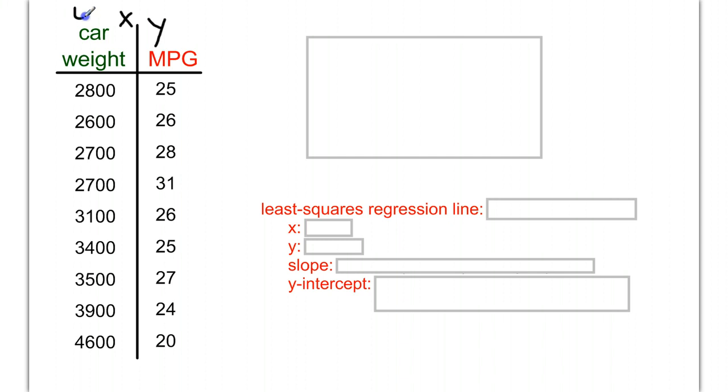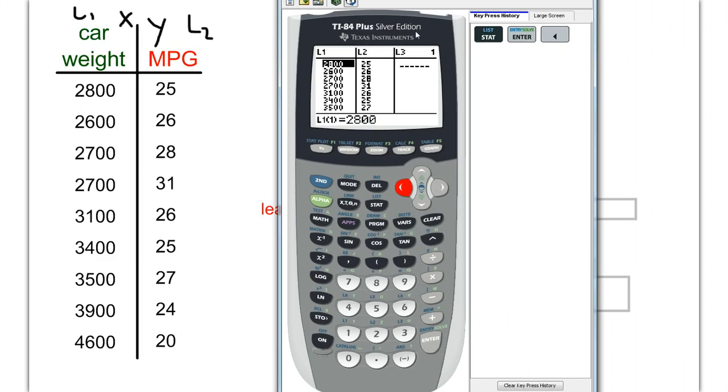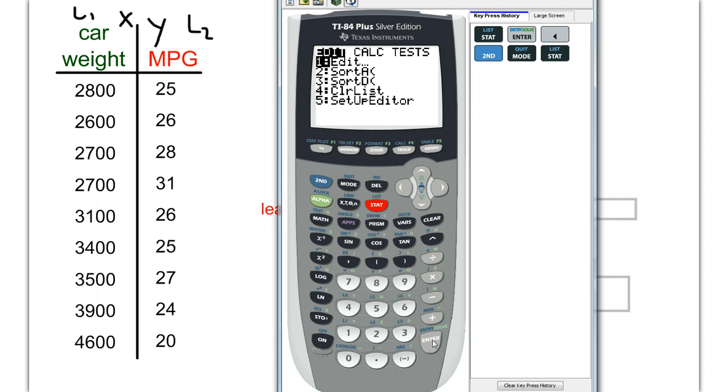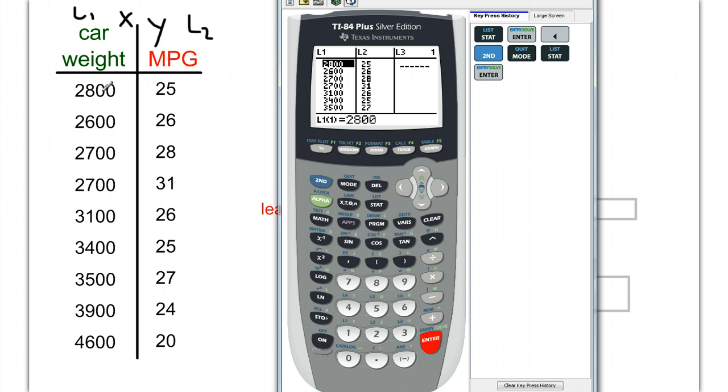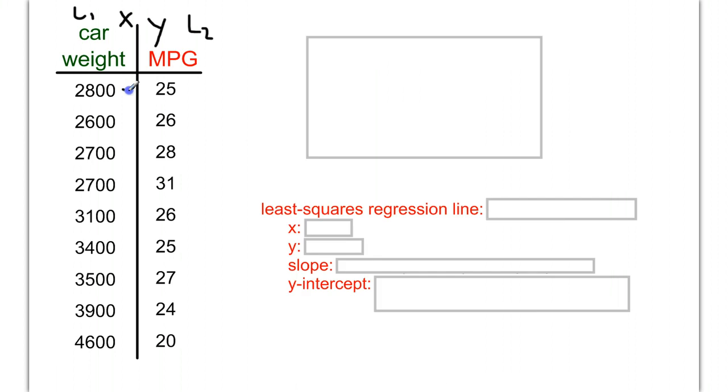When putting things on our calculator, this is list 1, and y (MPG) is list 2. Bring out your calculator, go to stat, edit. In list 1, clear it and type in all these numbers. Even though they're not numerically in order, type them in the order you see here. Same with miles per gallon. This way you'll make sure your x corresponds with the given y for every single data point.